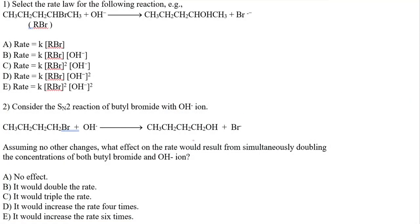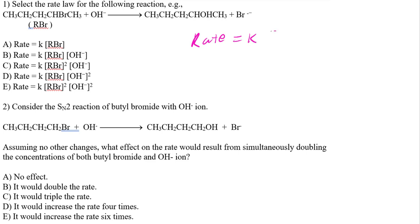We have to find the rate law for the following reaction. We have this molecule reacting with a hydroxide, giving us another molecule and a bromide. When it says 'find the rate law,' it really means the rate equals k times something in brackets — and depending on the type of reaction, you could have two brackets. So you're trying to figure out what was in the reaction.